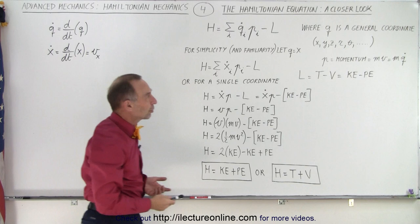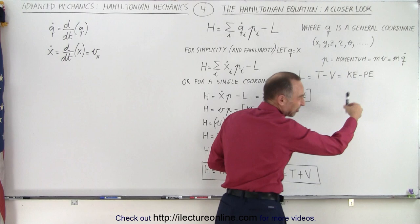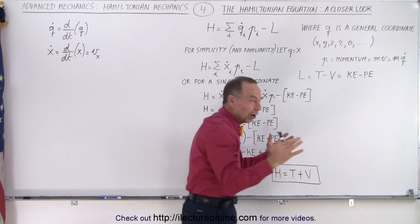Remember, the Lagrangian is the difference between the kinetic and the potential energy. I like this form better because it just reads easier. The Lagrangian is the kinetic energy minus the potential energy of the particular problem we're dealing with.